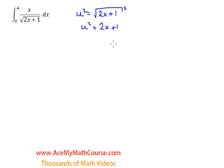Then what I'll do is I will isolate x and then take the derivative of both sides of the equation. So I get u squared minus 1 equals 2x. I'll divide both sides by 2, so I get x equals u squared minus 1 over 2.